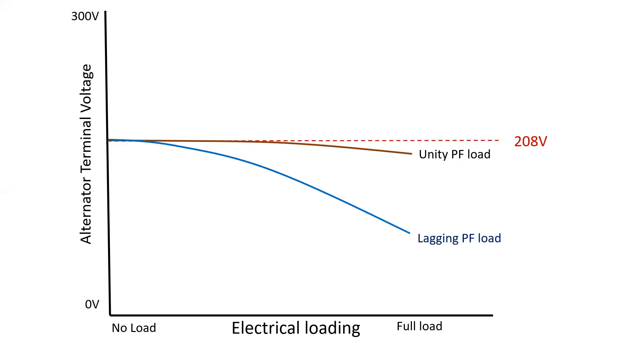By contrast, if we connect an extremely lagging power factor load to an alternator, it will cause the terminal voltage to drop significantly. And this will cause a problem for the AVR because at times it will not be able to maintain the voltage. So extremely lagging power factor loads cause the voltage of an alternator to drop significantly.